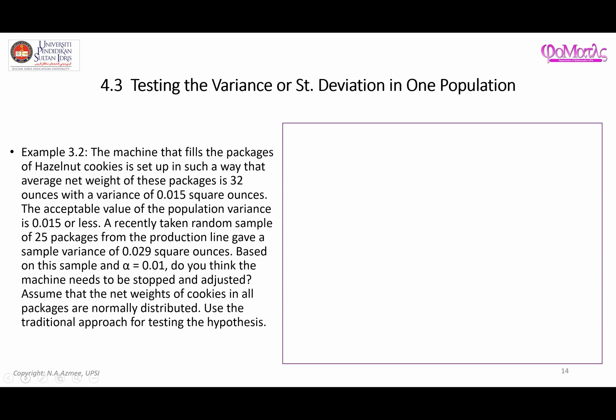Now let us look at a specific example — this is an example of a one-sided test. We have a machine that fills packages of hazelnut cookies set up so that the average net weight is 32 ounces with a variance of 0.015 square ounces. So this is the value of μ and this is the value of σ².